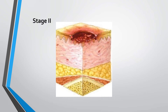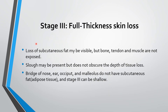In stage two, the epidermis and partial dermis have been lost. You can see the epidermis layer and the dermis layer. The dermis is not fully lost in this stage but can be visible — only the epidermis and a small layer of the dermis have been lost.